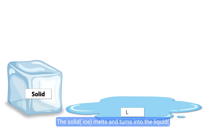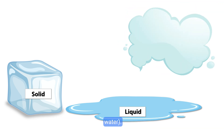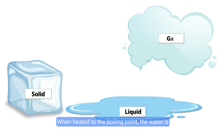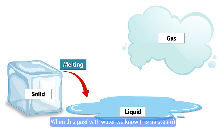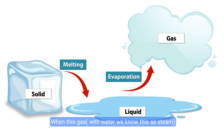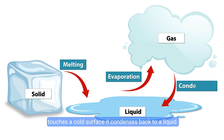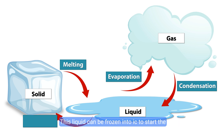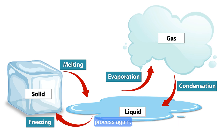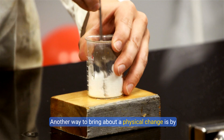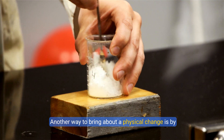The solid ice melts and turns into the liquid water. When heated to the boiling point, the water is evaporated. When this gas — with water we know this as steam — touches a cold surface, it condenses back to a liquid. This liquid can be frozen into ice to start the process again. Another way to bring about a physical change is by mixing substances.